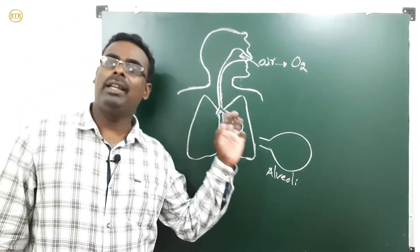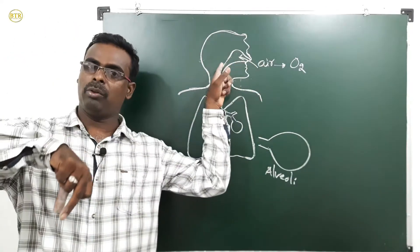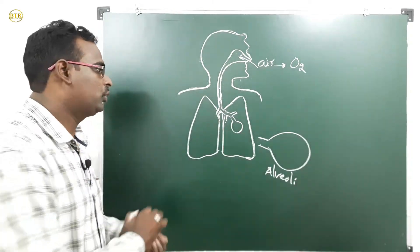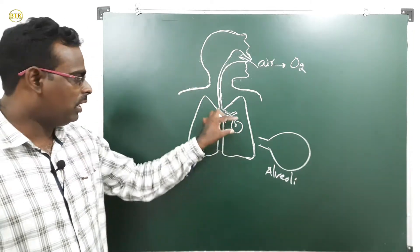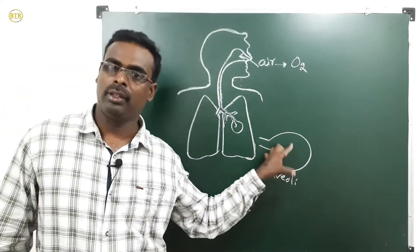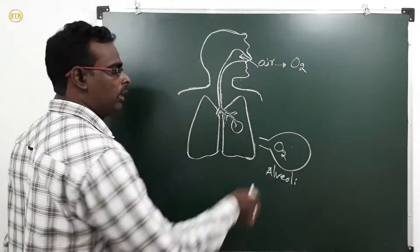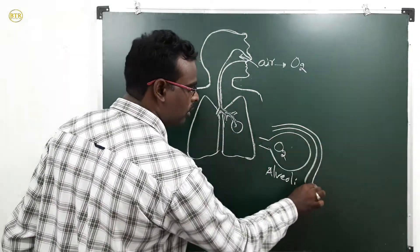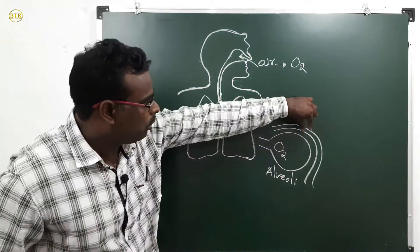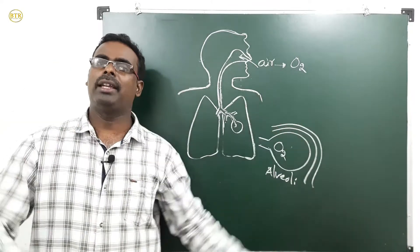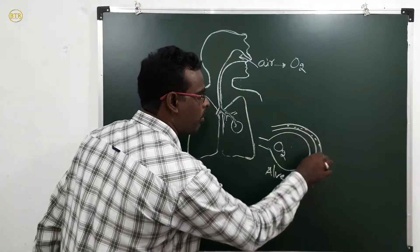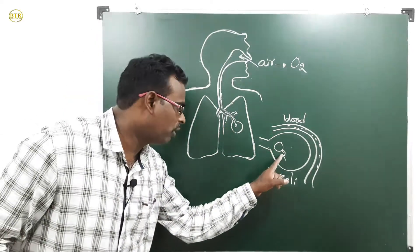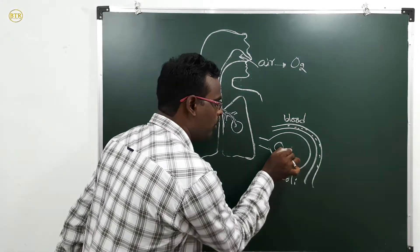Lungs are made up of many alveoli. When we take air into our body, the oxygen reaches the lungs, where the alveoli are. Oxygen enters into the alveoli. The alveoli are surrounded by small blood vessels called blood capillaries. Inside the blood capillary, blood is present. Oxygen moves from the alveoli into the blood.